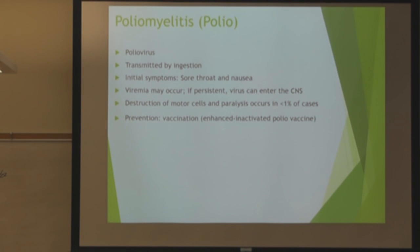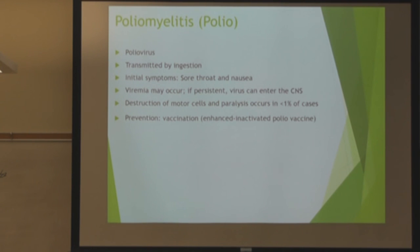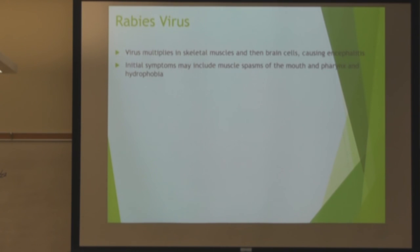Polio is transmitted by ingestion. Initial symptoms are nondescript — sore throat and nausea. Viremia can occur. Prevention is through vaccination, and this section should be fairly easy as it's mostly familiar material. Rabies virus — initial symptoms again, with hydrophobia being one of the more notable and interesting symptoms.